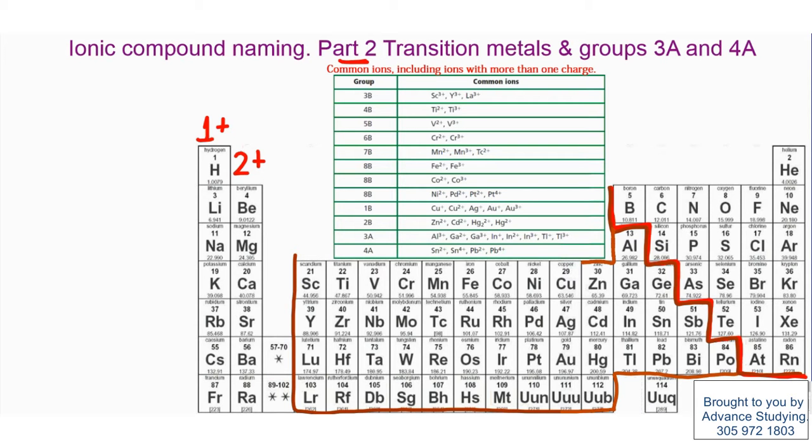For example, we could look at Fe. It has a charge of positive 2 and positive 3. We could look at Copper, positive 1 and positive 2. And there is no way really of knowing what the charge would be unless we are given this chart.